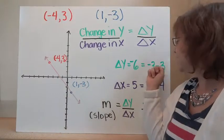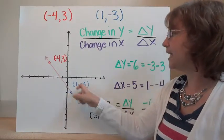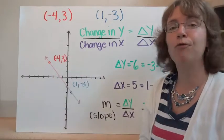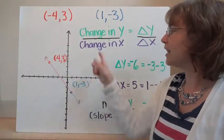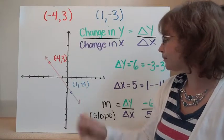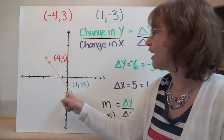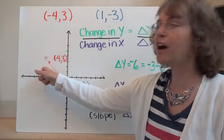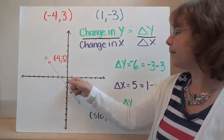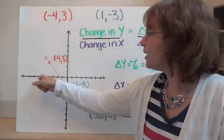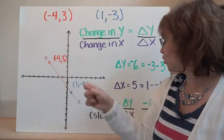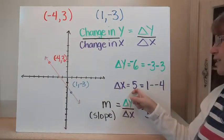The reason I'm doing it this way — starting with the endpoint and subtracting the beginning point — is so we can have a formula to calculate slope for any points, even if we can't graph them. Now let's look at our change in x. We started at negative four and end up at one, so we went four in one direction and an additional one, giving a change in x of five.